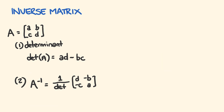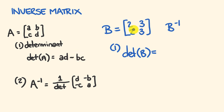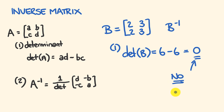A few more examples. Matrix B has elements 2, 3, 2, and 3, and we're working out the inverse of B. First, the determinant: AD minus BC gives us 2 times 3, which is 6, subtract 2 times 3, which is 6. So 6 minus 6 is equal to 0. As mentioned before, if the determinant equals 0, there is no inverse of B — no inverse is possible.